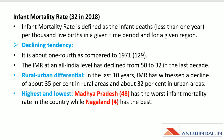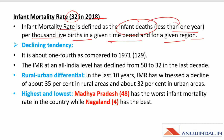Infant mortality rate is currently 32 in the year 2018. It is defined as the number of infant deaths — children less than one year old — per thousand live births in a given time period and region. There has been a declining tendency: in 1971 it was 129, while in 2018 it is approximately one-fourth of that, which is 32.